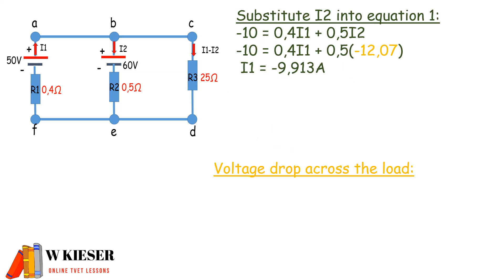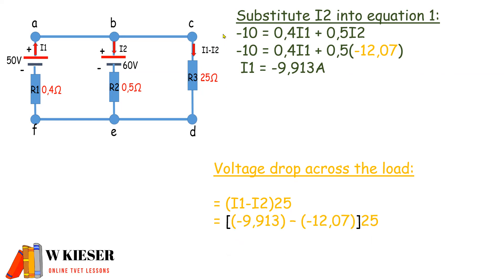The final part of the question is to calculate the volt drop across the load. Here we have I1 minus I2 multiplied by the value of the load, which is 25 ohms. Substituting: I1 was minus 9.913 and I2 was minus 12.07, multiplied by the load resistance. Subtracting inside the brackets, we end up with a volt drop of 53.925 volts. Thanks for watching this video for solving the loop equation using Kirchhoff's Laws.